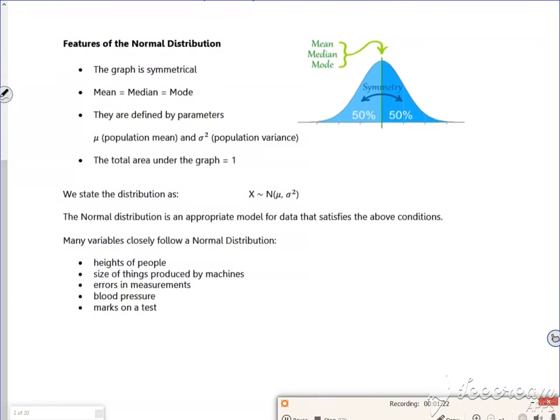Now what's important is that the graph is symmetrical. So binomial wouldn't be symmetrical, or would only be symmetrical if p was a half. So this is symmetrical, so the mean, the mode, and the median all match up in the middle.